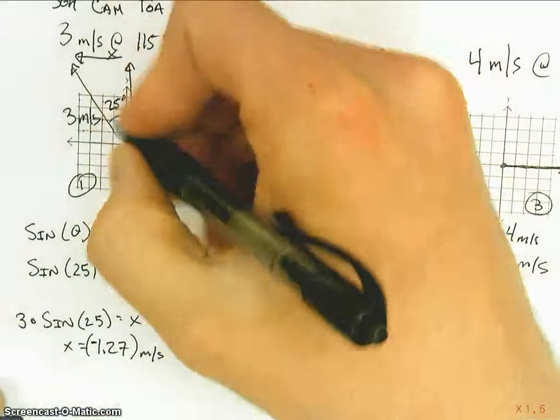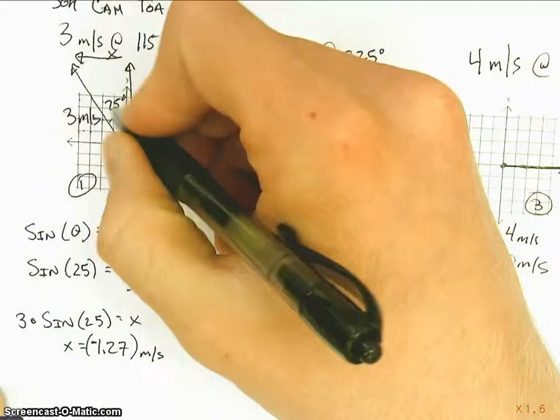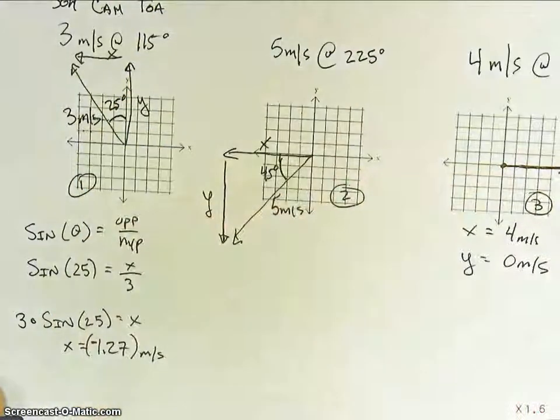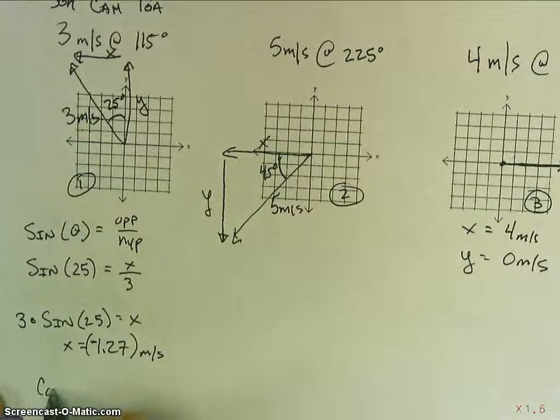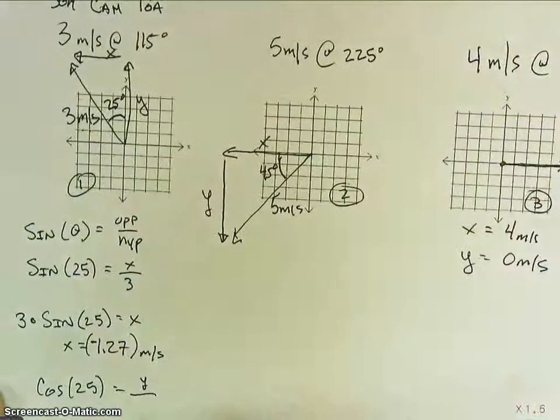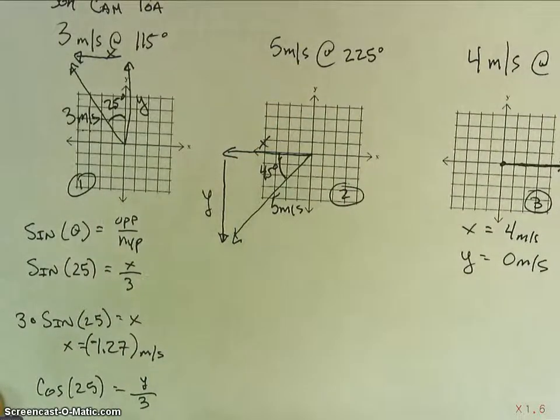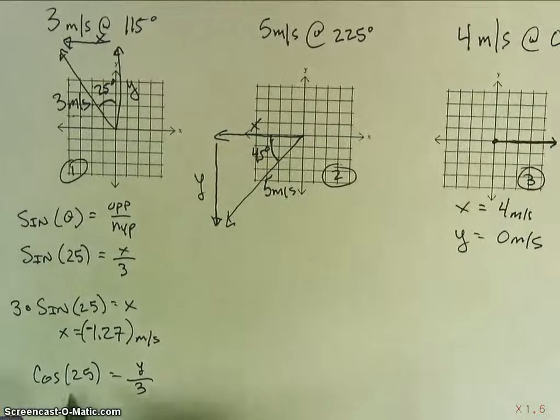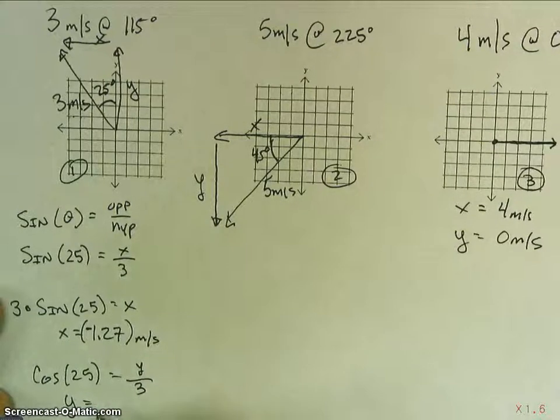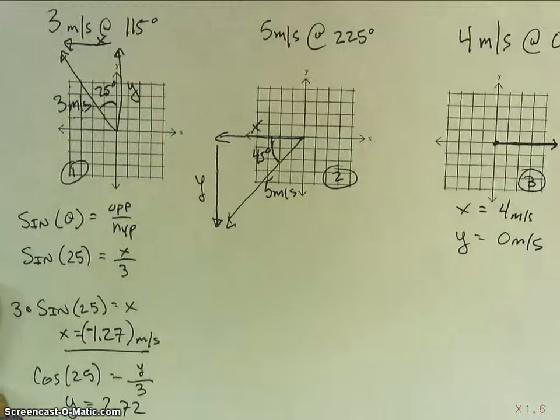Now, I look at my y and it's adjacent, and so I'm going to use the similar function except cosine because I'm looking for adjacent. I have my hypotenuse, I have 25 degrees, so it ends up being cosine of 25 is going to be equal to my adjacent y divided by 3, which is my hypotenuse. Using algebra, it becomes 3 times cosine of 25. Y ends up being 2.72. There's my x, there's my y.